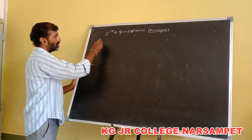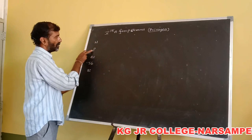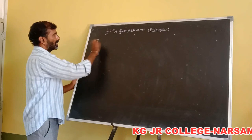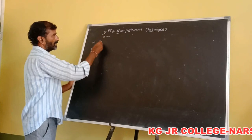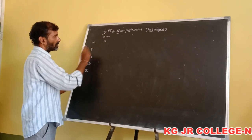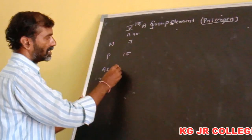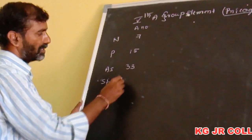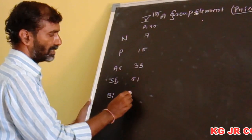Name of elements and their atomic numbers: nitrogen is 7, phosphorus is 15, arsenic is 33, antimony (symbol Sb) is 51, bismuth is 83.